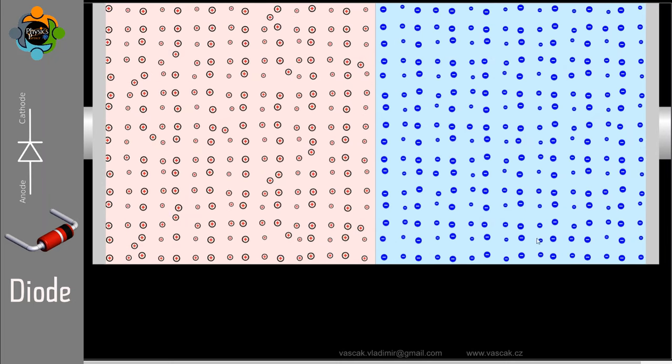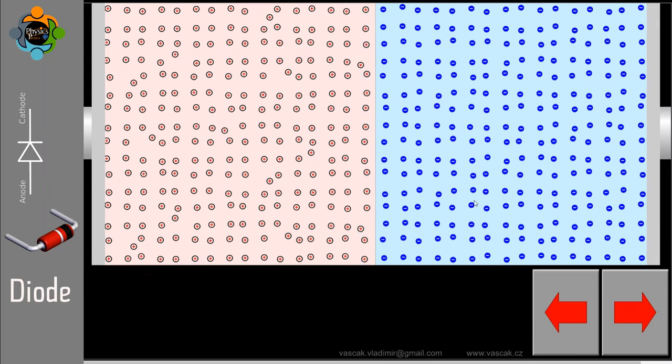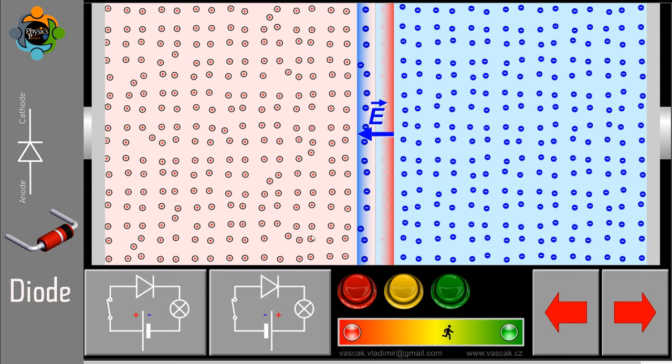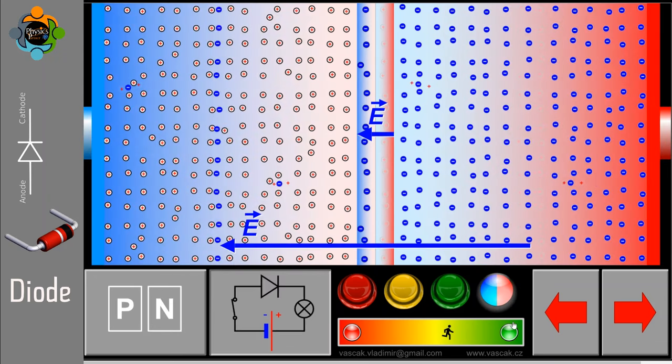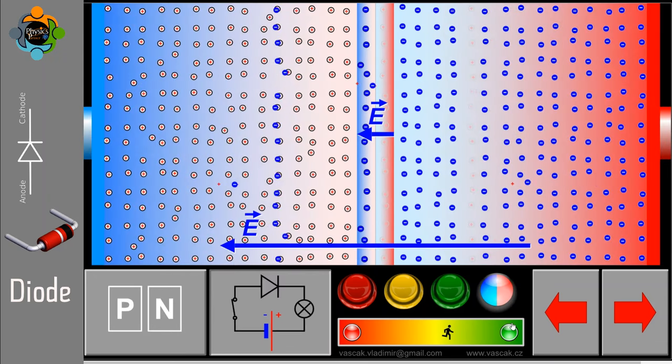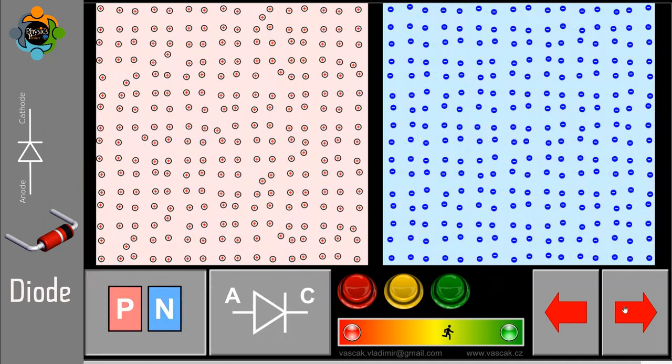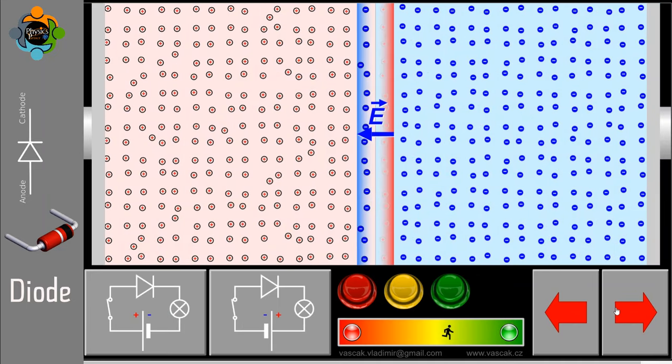When combined in a single crystal, these regions form a p-n junction allowing the diode to control the flow of electric current in one direction while blocking it in the other, enabling its function as a semiconductor device.